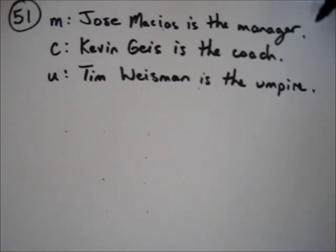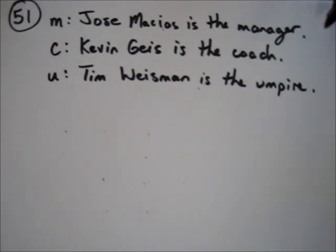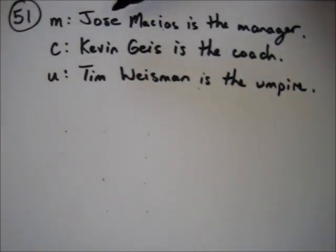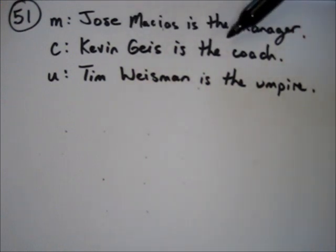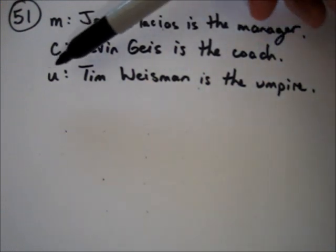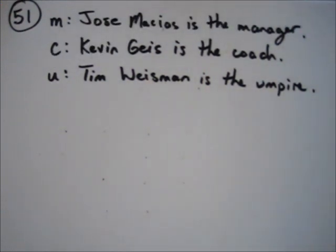What I've done initially here is create three simple statements from their compound statements. M is the statement 'Jose Macias is the manager.' C is the statement 'Kevin Geis is the coach.' U is the statement 'Tim Wiseman is the umpire.'